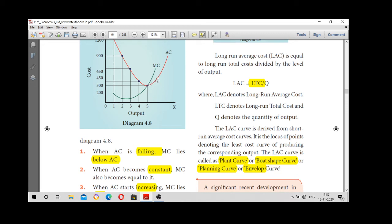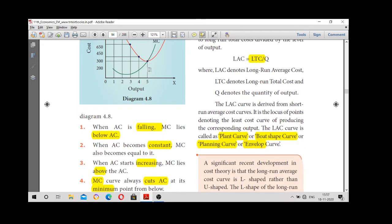See, average cost increases. Marginal cost, how much? Above. So when average cost curve is increasing, MC curve lies above AC. These are the three points.